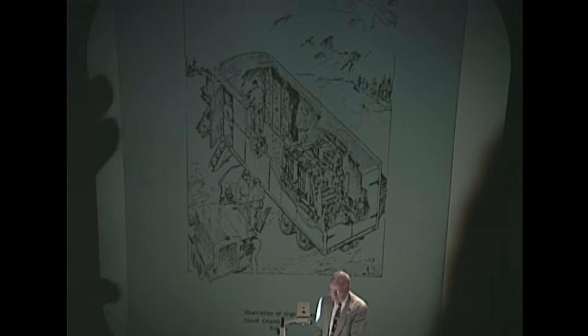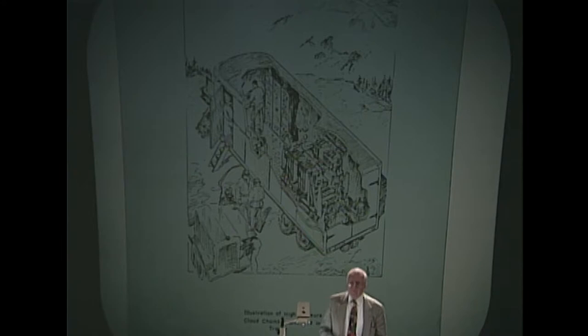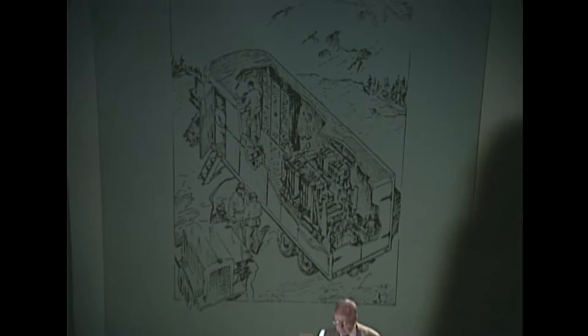Nuclear emulsions were used very early on. Here we have a cosmic ray particle interacting and forming a star. Some of the questions you're asking yourself are, what are the cosmic rays? What is their makeup? How do they interact? Here we have one of the early devices, a high pressure cloud chamber. These devices were taken to higher altitudes, to the cosmic ray station in Echo Lake.